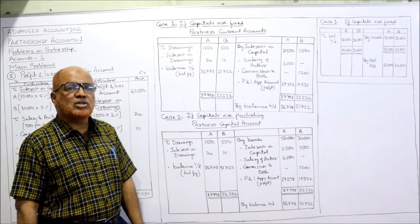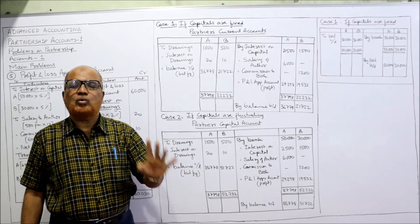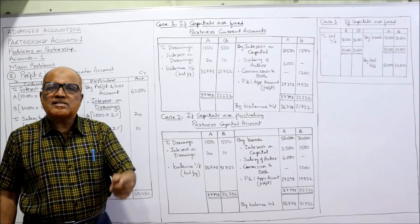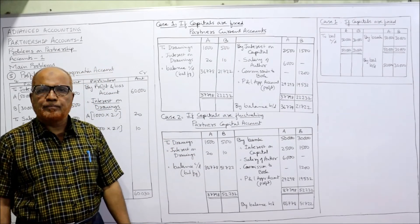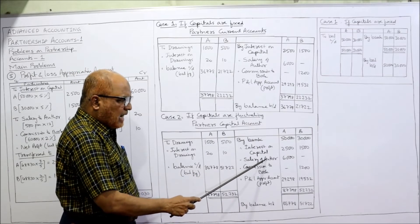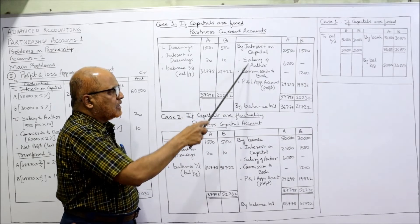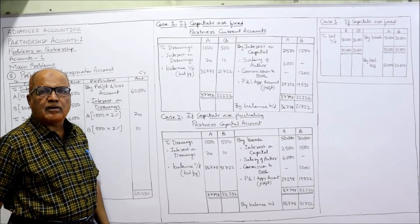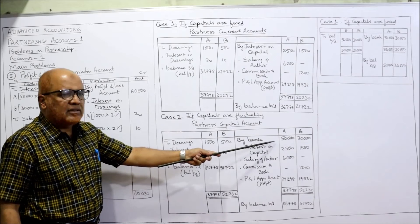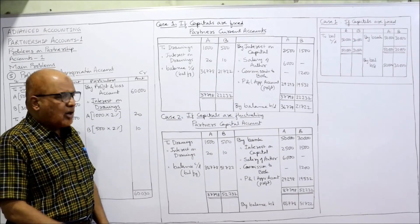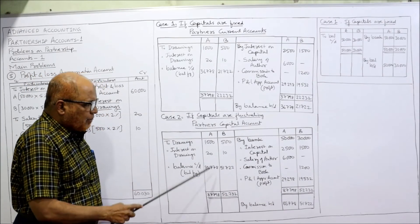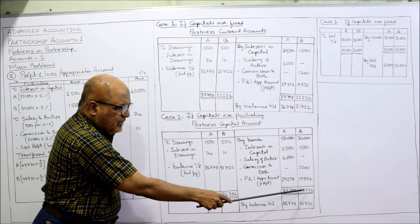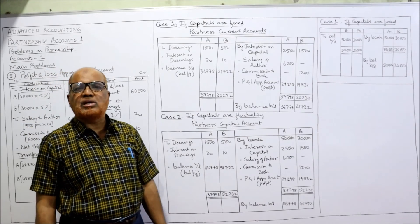Second case: if capital accounts are fluctuating. In this case only one account is prepared for each partner - the capital account. Credit side shows bank: 50,000 and 30,000 as opening capital. Then all adjustments - interest on capital, salary, commission, share of profit - are also taken in this capital account. Debit side takes drawings and interest on drawings. The closing balance for Author's capital account is 86,778 (total credit minus 1,000 drawings minus 20 interest). Book's closing capital balance is 51,722 (total credit minus 500 minus 10).